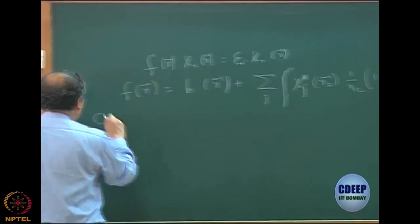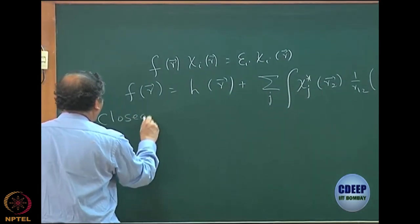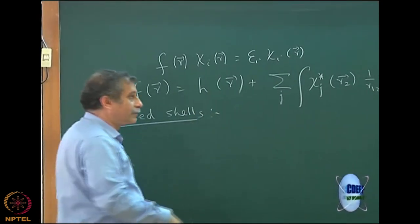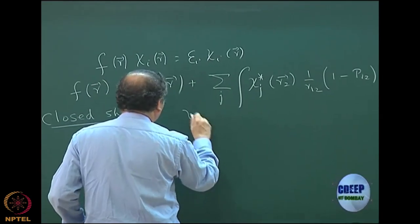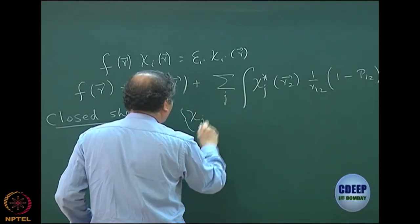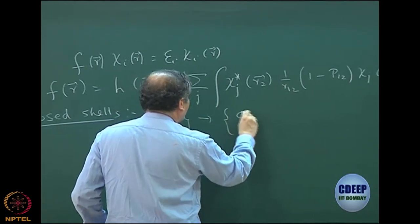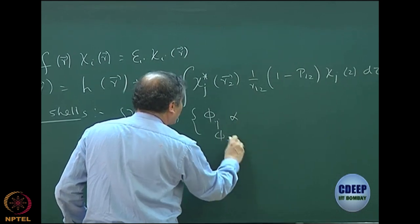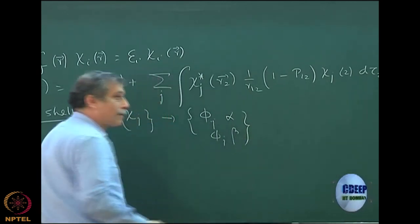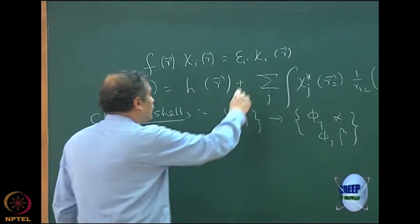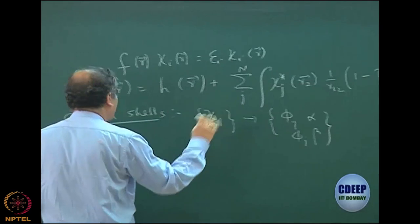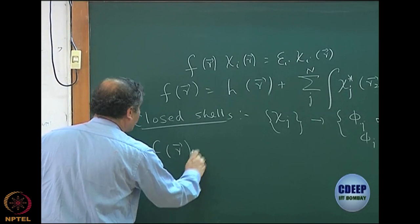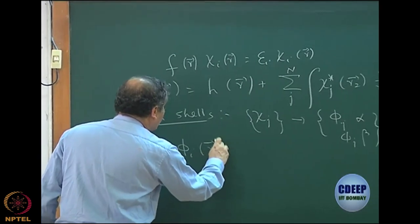Then we went to the closed shell — just a quick summary to this point — where we expanded, writing chi_j of r as phi_j(alpha) and phi_j(beta). So we have n/2 sets now instead of n. Then we had an expression for the Hartree-Fock equation, very similar but only for the space orbitals.